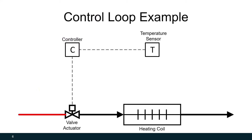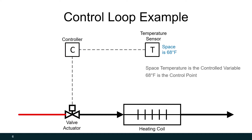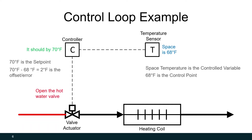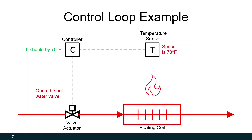Let's go through an example to better define those terms. Here we have a hot water coil that's heating a room. The temperature sensor detects that the space is at 68 degrees. Because the heating coil is heating the room, our controlled variable is space temperature, and 68 degrees is the current control point. That sensor sends an input signal to the controller, which compares it to its set point of 70 degrees. The difference — a 2-degree error — causes the controller to send an output to the hot water valve to open, allowing hot water to flow to the heating coil and start heating the space until it reaches 70 degrees.